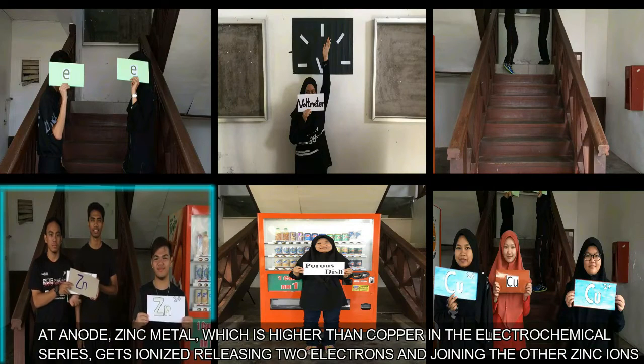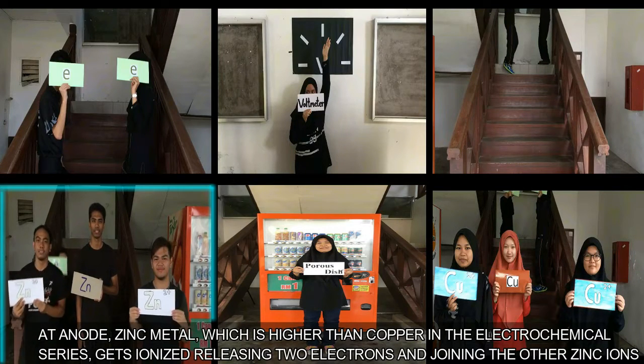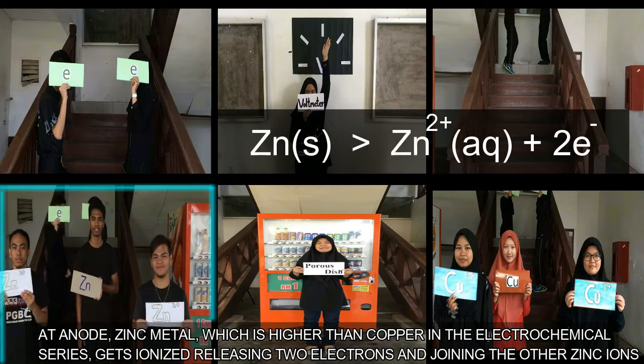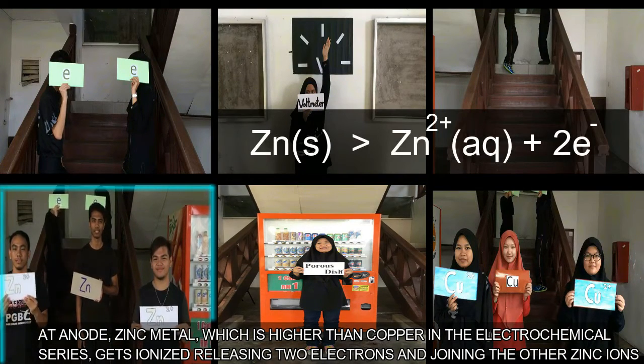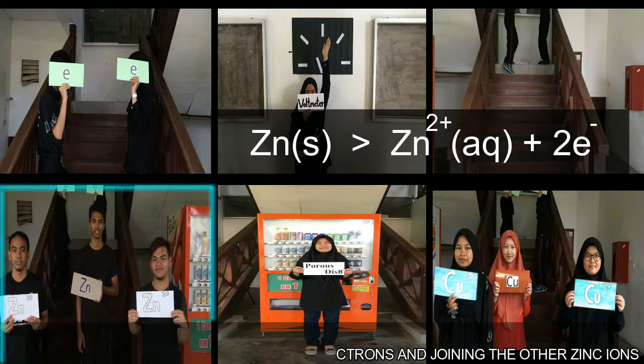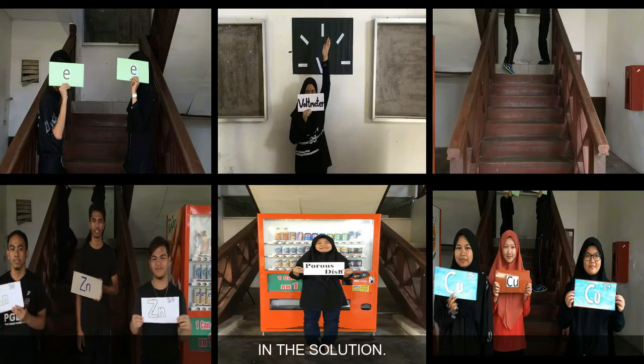An anode, zinc metal, which is higher than copper in the electrochemical series, gets ionized, releasing two electrons and joining the other zinc ions in the solution.